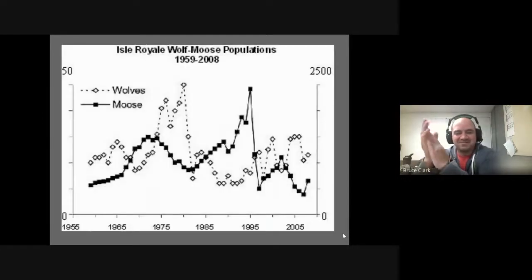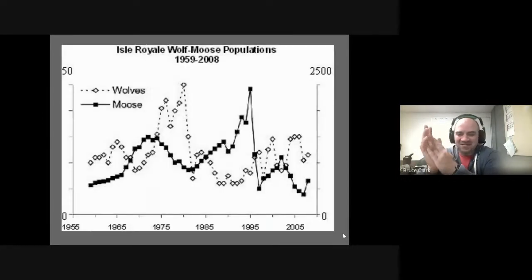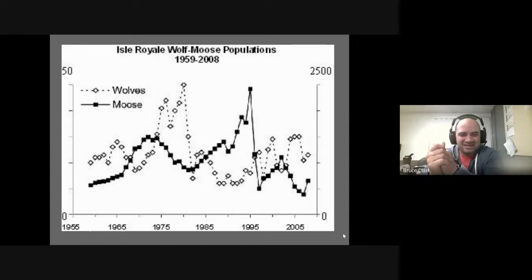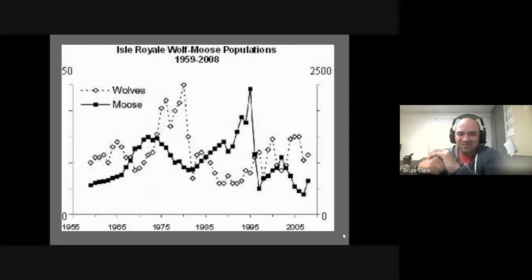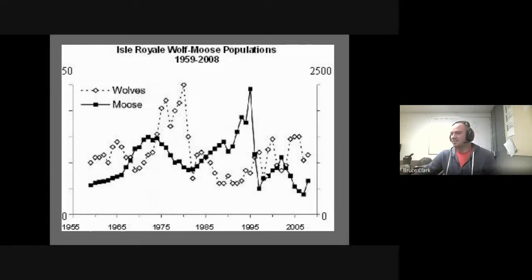And that is our case study of the ebb and flow of predator versus prey populations. There'll be a short assignment based on Isle Royale National Park.